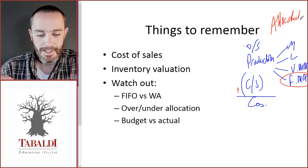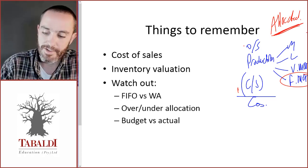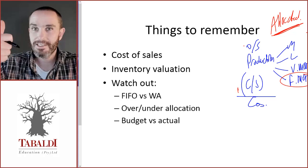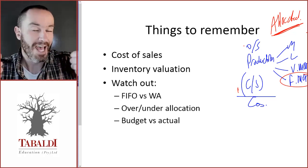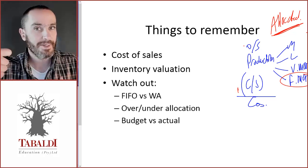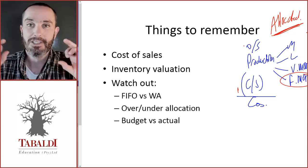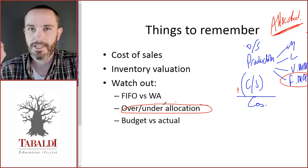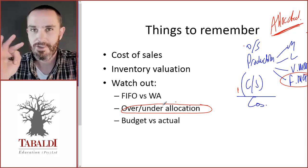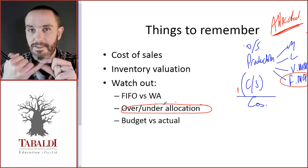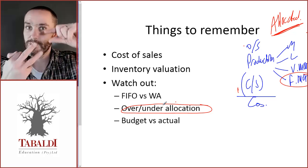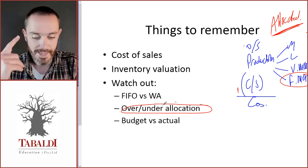Since we use allocated fixed manufacturing overheads when we do absorption costing, this will differ from the actual overheads. The difference between allocated fixed manufacturing overheads and actual is our over or under allocation of fixed manufacturing overheads. Remember there are three different figures: budgeted fixed manufacturing overheads, allocated fixed manufacturing overheads, and actual. The difference between allocated and actual is the over or under allocation.